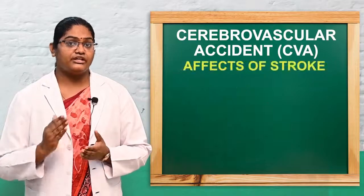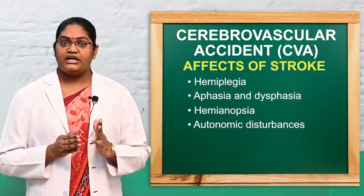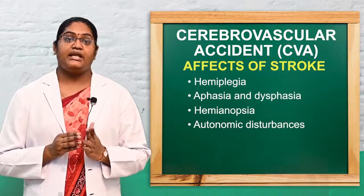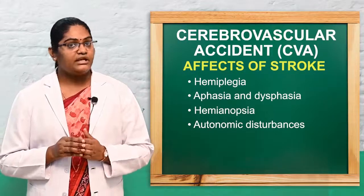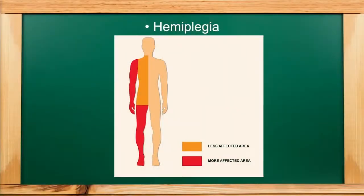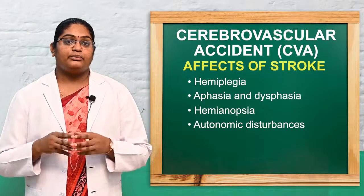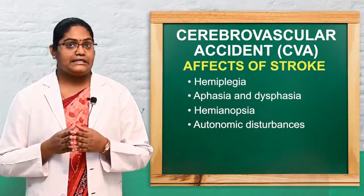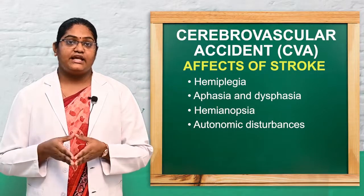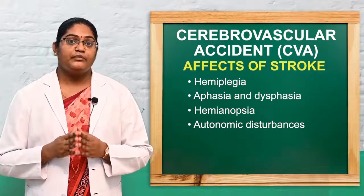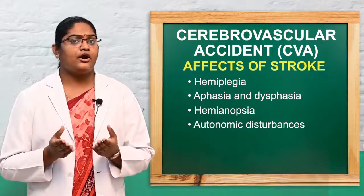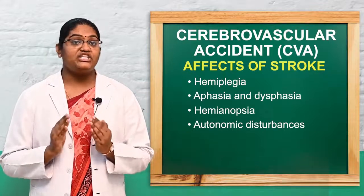The effects of stroke include hemiplegia, dysphagia, aphasia, hemianopsia, and autonomic disturbances. Hemiplegia is a type of paralysis — specifically paralysis of one side of the body. Aphasia is the inability to produce speech or loss of language. Hemianopsia is loss of vision in one or both eyes. These are the major effects of stroke.